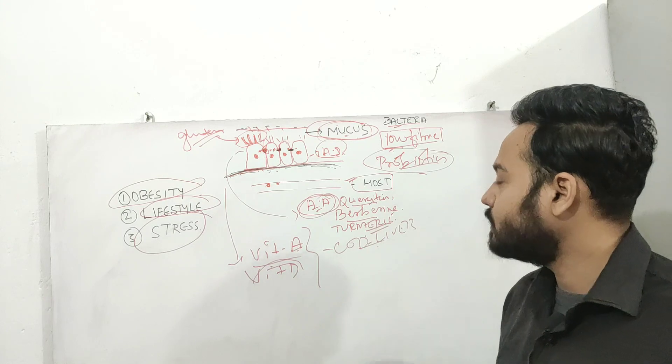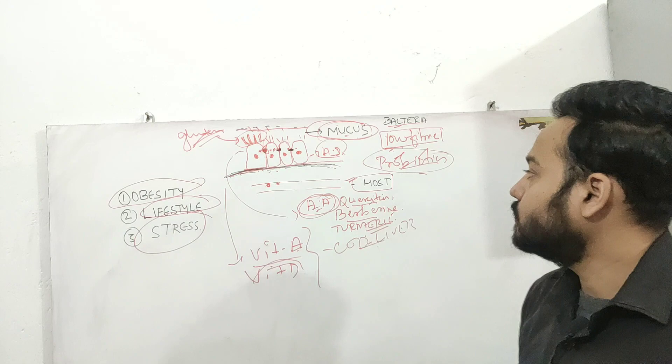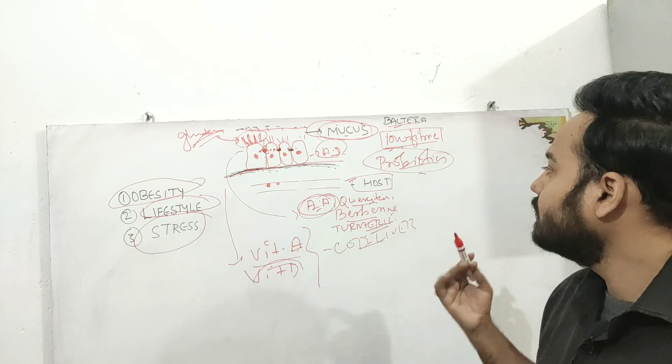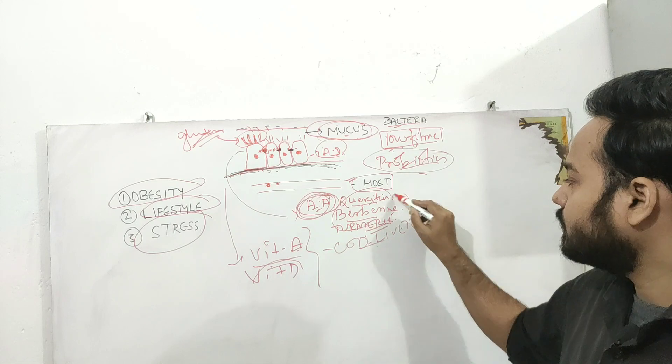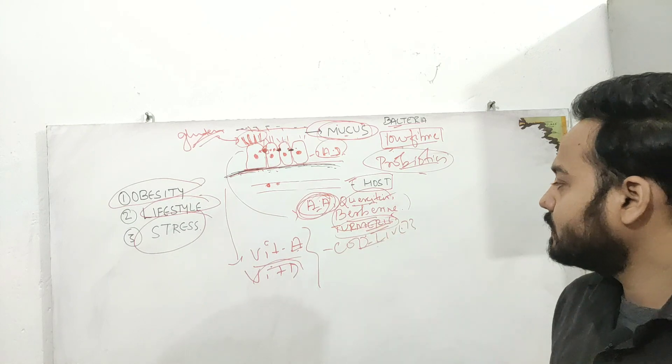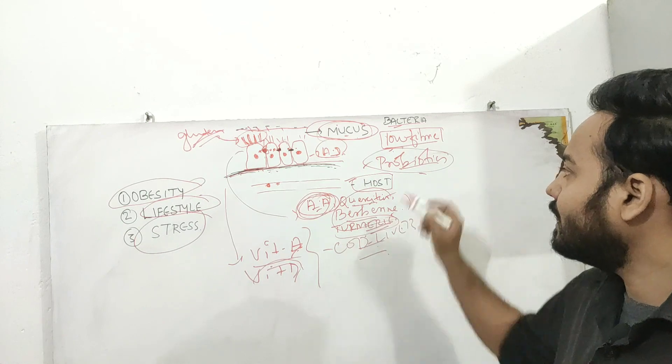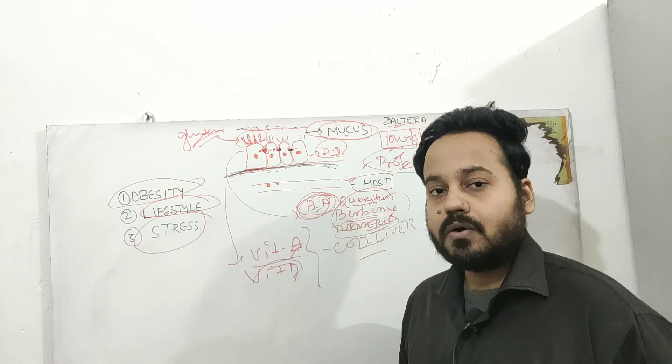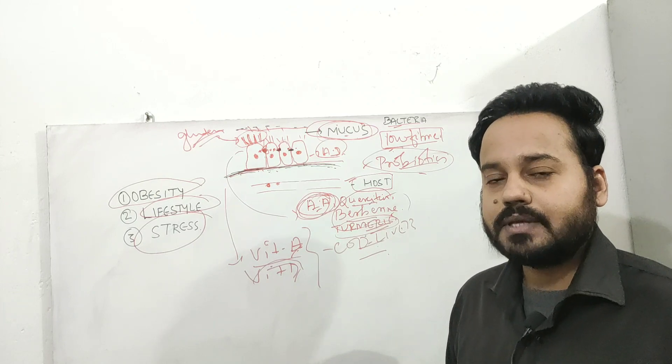So you need to avoid gluten, you need to avoid sugars, processed food, unhealthy oils, partially hydrogenated oils. You need to eat high quality protein, lots of green leafy vegetables, fruits for flavonoids and phenolic compounds. Turmeric is very important. Then take cod liver oil for vitamin A, vitamin D, probiotics and fiber. So this is how you can prevent or even reverse, following this protocol, you can even reverse certain autoimmune disorders. Thank you.